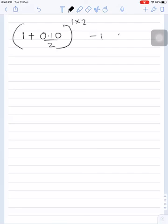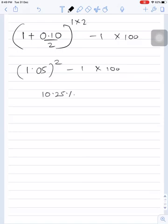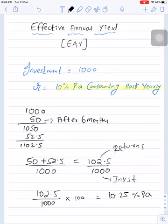So if you put all these calculations in the formula you will get answer as 1.05 square minus 1 into 100. This will give you 10.25%. So 10% per annum compounding half yearly is as good as 10.25% per annum compounding annually.